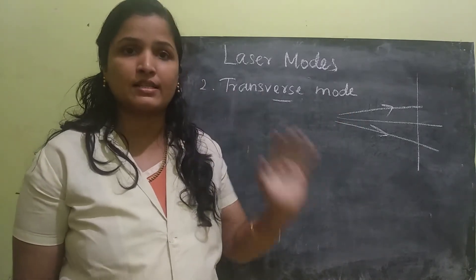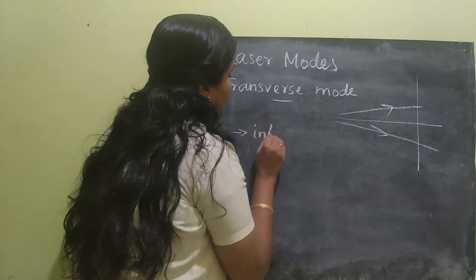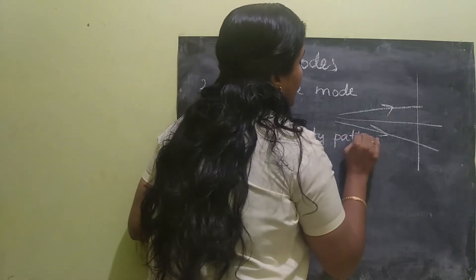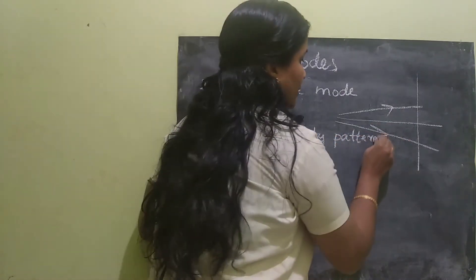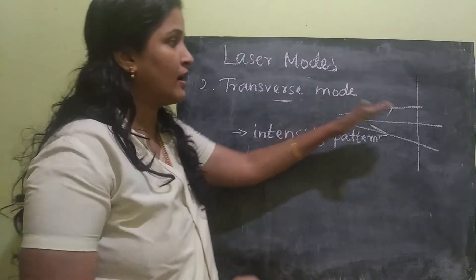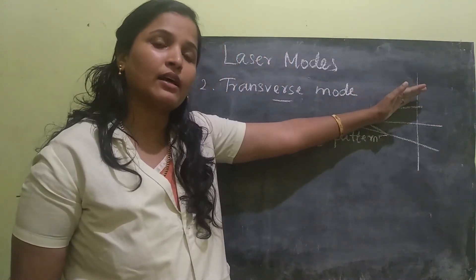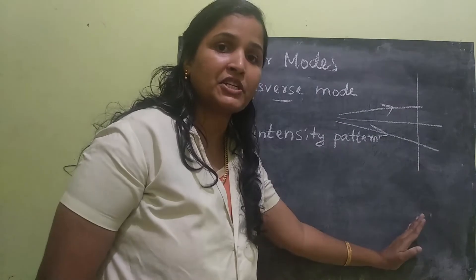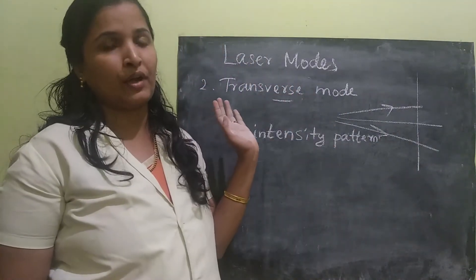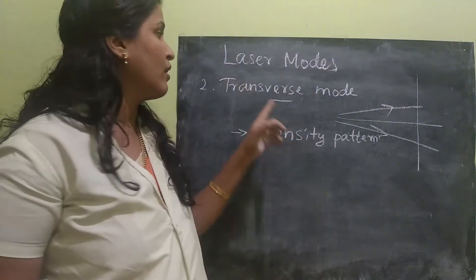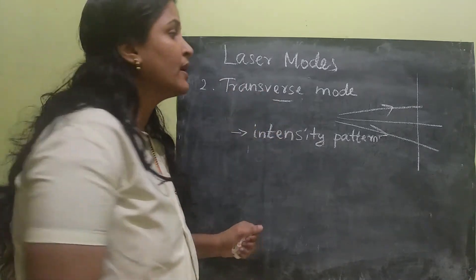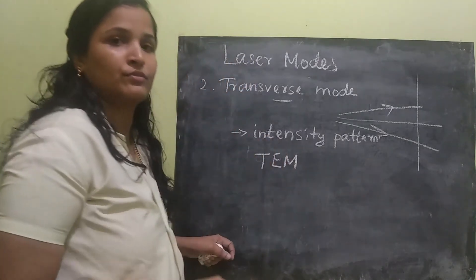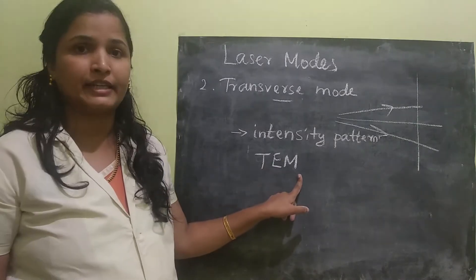Transverse mode is just the study of the intensity pattern of the electromagnetic radiation. Because apart from the optical axis, in some other axes also the laser beam emits — so in order to study that, we take a cross section and study the pattern. There are many sub-modes in this transverse mode, which are called transverse electromagnetic modes, or TEM.